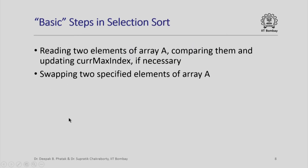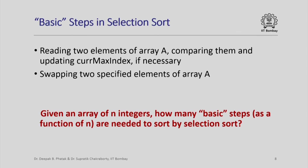Looking at these functions, the basic steps in selection sort are: read two elements of array a, compare them, and update current_max_index if necessary. This is what the basic step in find_index_of_max was doing, and then of course the swap function swapped two specified elements of array a. So these are my basic steps in selection sort, and now we ask: given an array of n integers, how many basic steps as a function of n are needed to sort this array by selection sort?